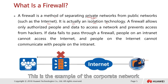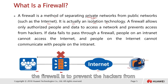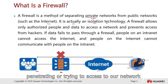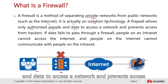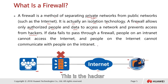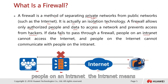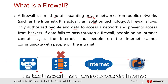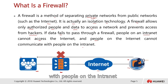For example, the corporate network sits behind a firewall that faces the internet, preventing hackers from penetrating or attempting to access the network. A firewall allows only authorized people and data to access a network and prevents access from hackers. If data fails to pass through a firewall, people on the intranet cannot access the internet, and people from the internet cannot communicate with those on the intranet.